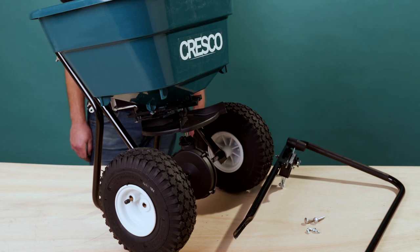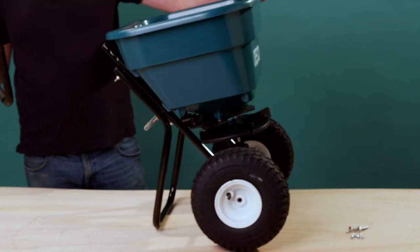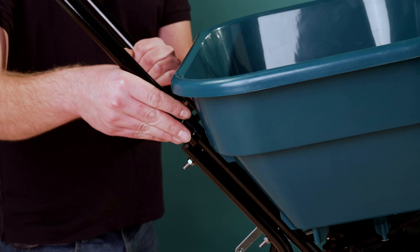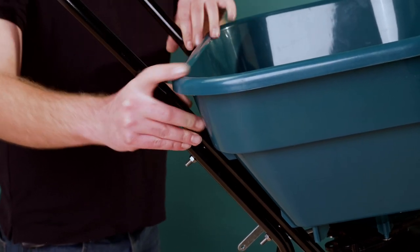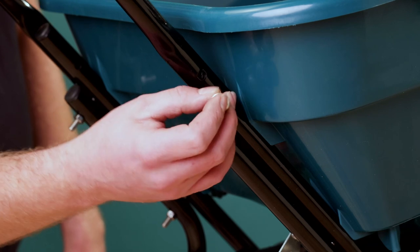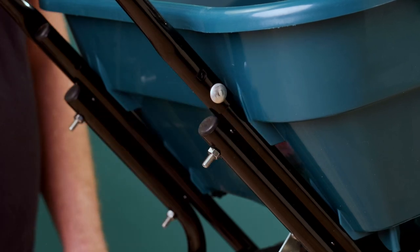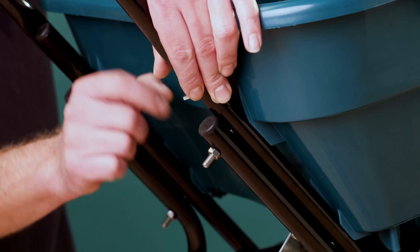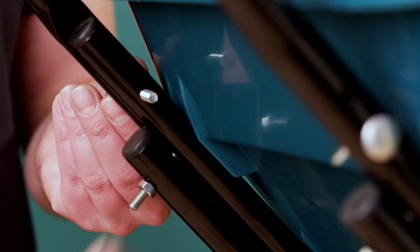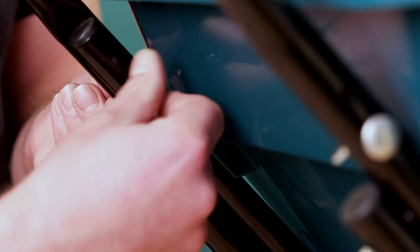Align the holes at the bottom of the handlebar with the holes at the top of the lower frame. You may need to pull the ends apart slightly to place in position. Thread the M6 by 35 bolt through the hole of the handlebar and lower frame. Use the M6 wing nut to tighten. Repeat the same process on both sides.